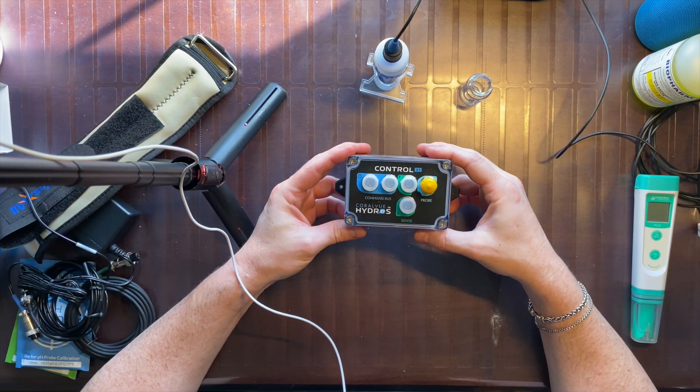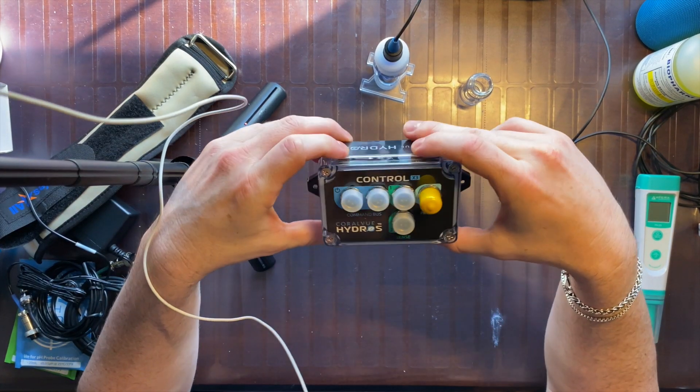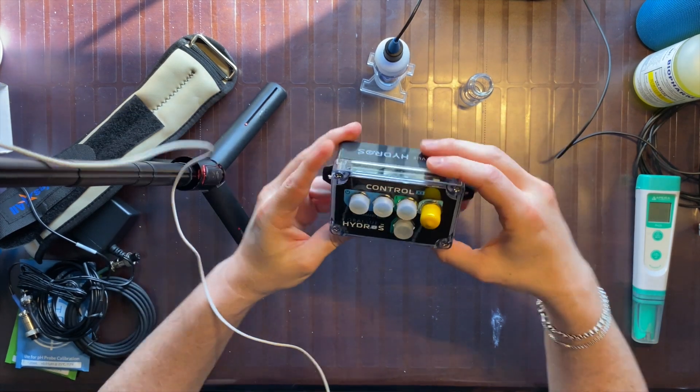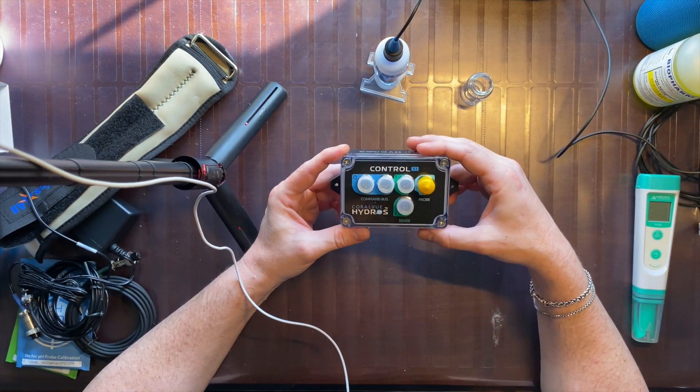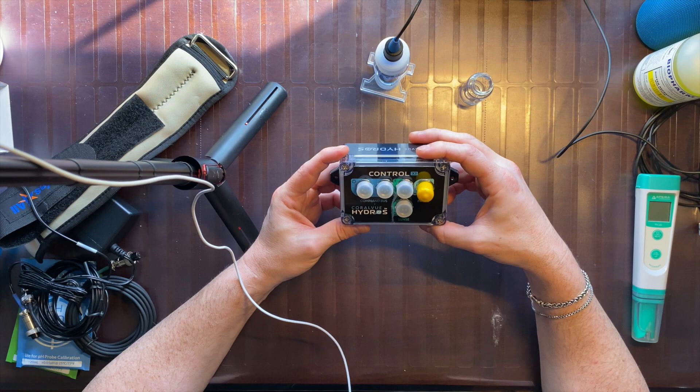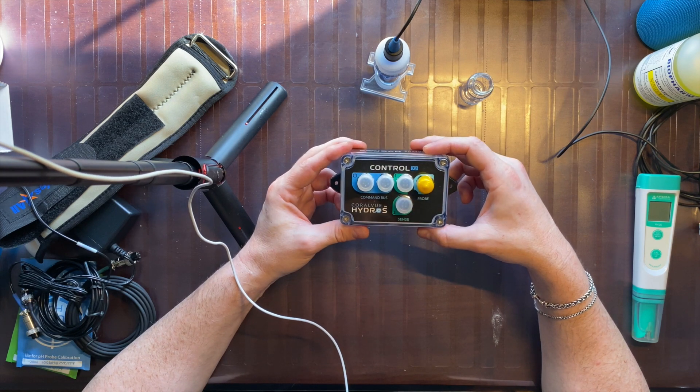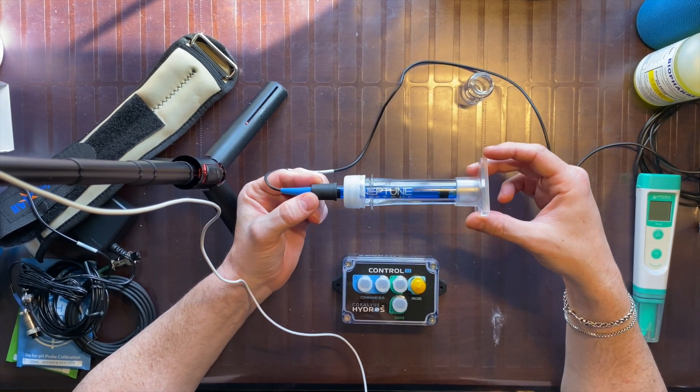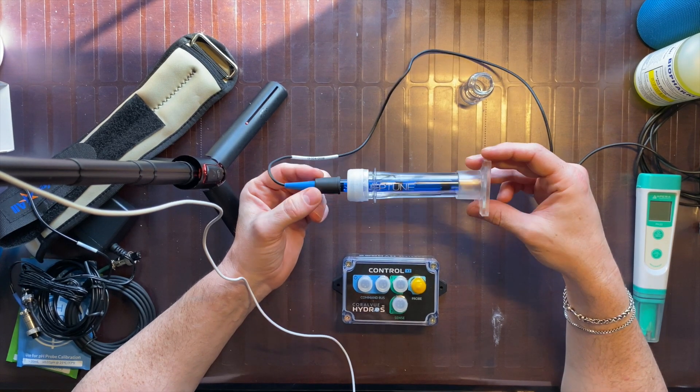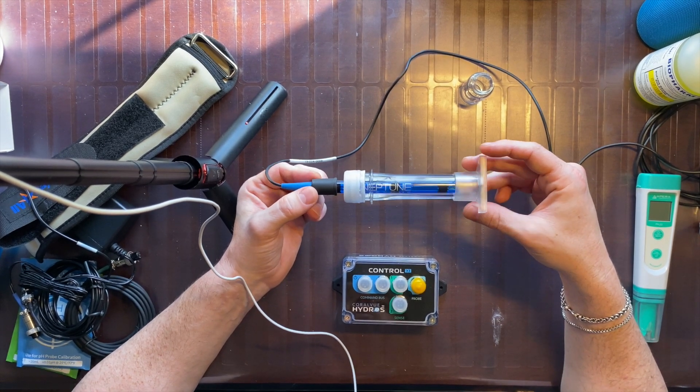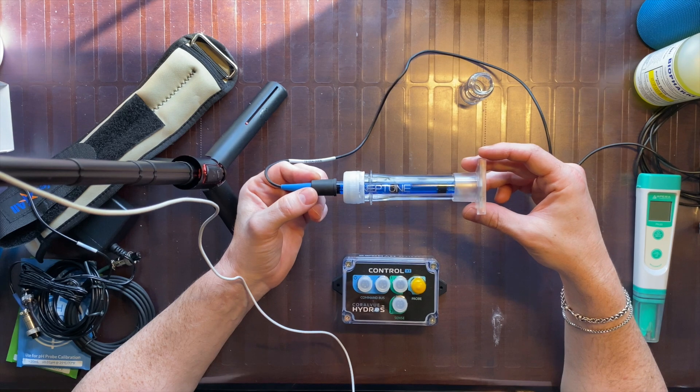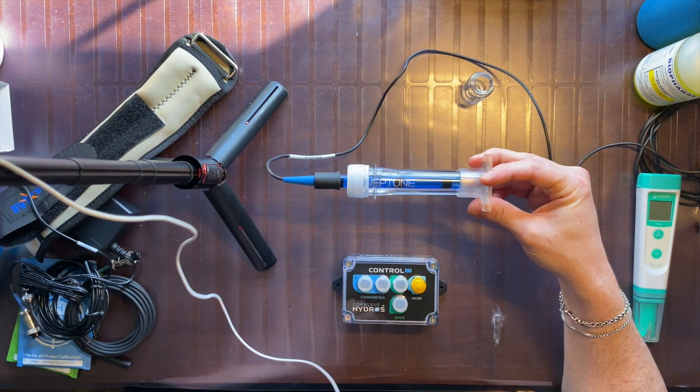The main reason that I purchased this is to have some way of checking the accuracy of my Apex. Why that became necessary for me? My pH probe from Neptune failed within a month. The troublesome part was not that it failed, but that it was inaccurate, which is harder to detect.